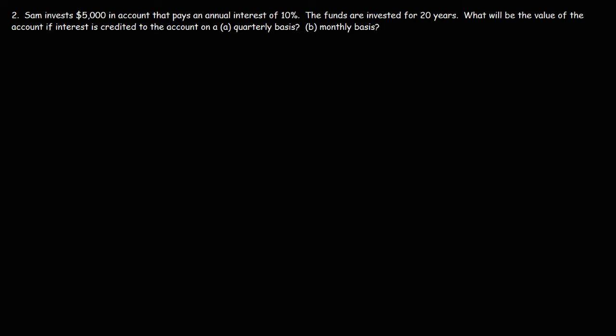Problem two: Sam invests $5,000 in an account that pays an annual interest of 10%. The funds are invested for 20 years. What will be the value of the account if interest is credited on a quarterly basis? On a quarterly basis, N is 4 — there are four quarters in a year, and each quarter represents three months. Let's use the same formula.